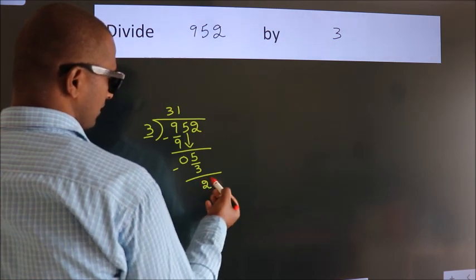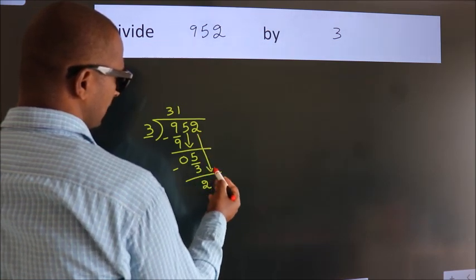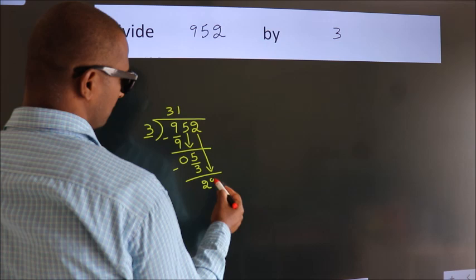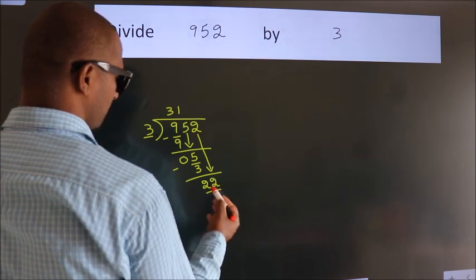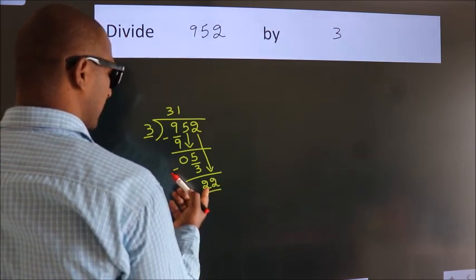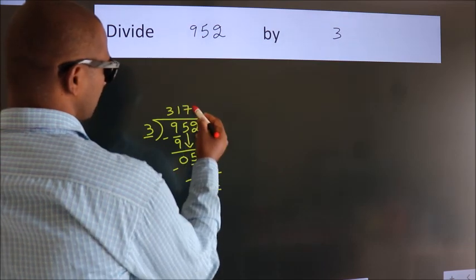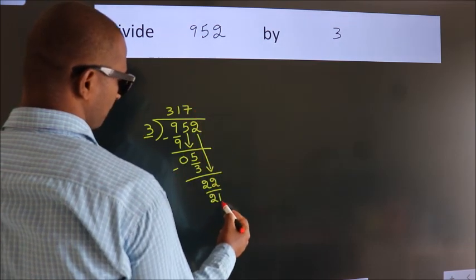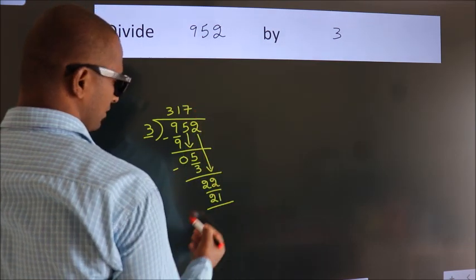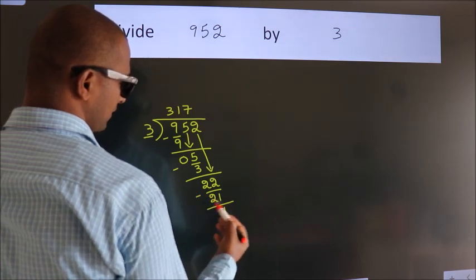After this, bring down the beside number. So, 2 down. So, 22. A number close to 22 in 3 table is 3 7s 21. Now, we subtract. We get 1.